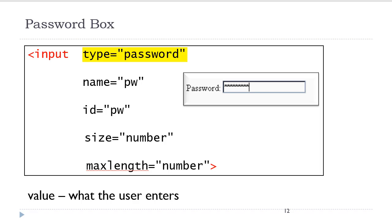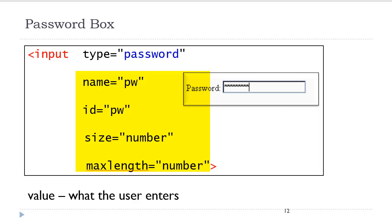The password box is created using the input tag, and we vary the value of the type attribute and set it to password. A password box is the same as a text box, except that you cannot see what the user is typing in it, as those characters are masked by the browser. It has the same attributes. You always need a name attribute to uniquely identify that form element for the server, and that is paired with the ID attribute, which is used with JavaScript and CSS. JavaScript is commonly used to validate the form before it is sent to the server. You always want to set the maxLength property to limit the number of characters for security reasons.